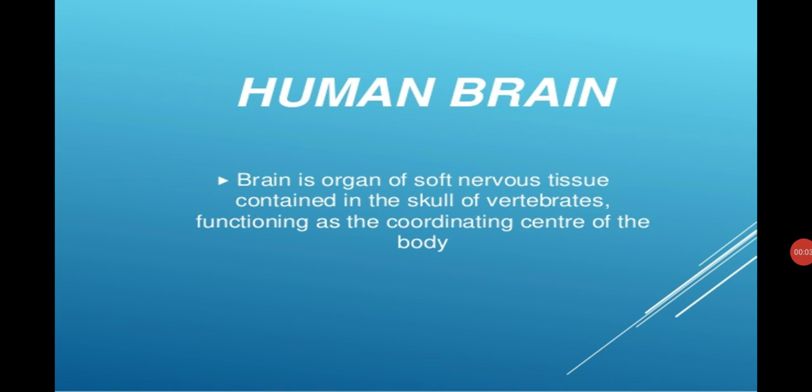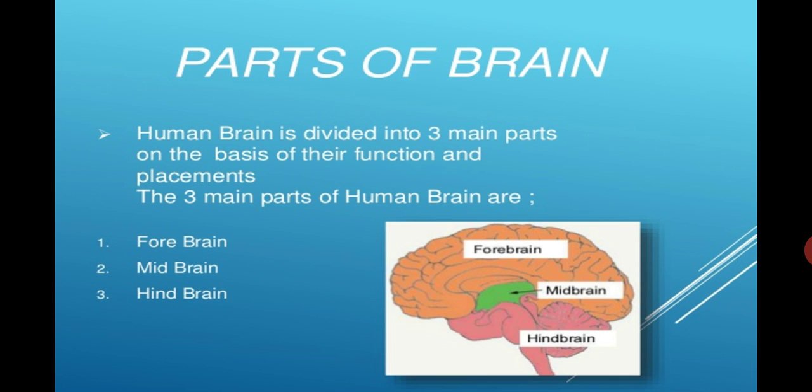Dear students, our today's lesson is about the anatomy of human brain. So what is brain? Brain is the organ of soft nervous tissues contained in the skull of vertebrates, functioning as a coordinating center of the body. The human brain is acting as a coordinating center for the whole body.